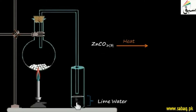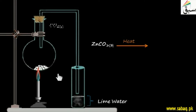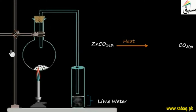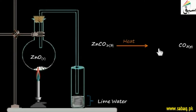Here the lime water turns milky. What is this? It is proof that a gas is being produced. It is basically carbon dioxide, produced by zinc carbonate. When we heat it, the gas travels through the delivery tube into the lime water, and the clear solution turns milky. This is proof that zinc carbonate is converted into zinc oxide and carbon dioxide.